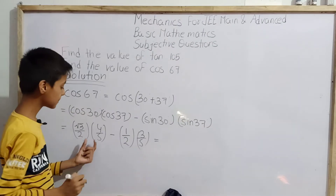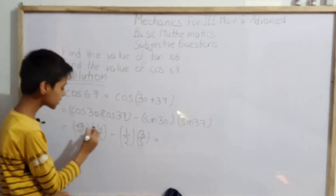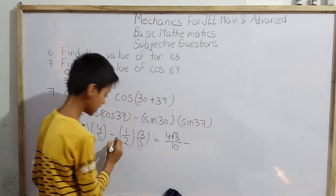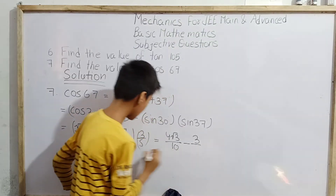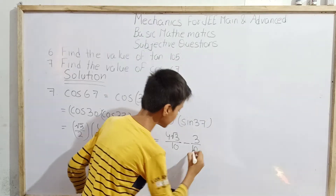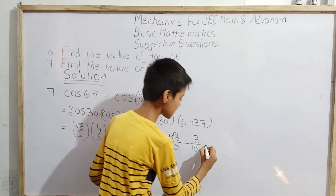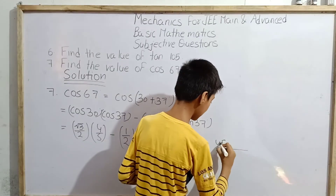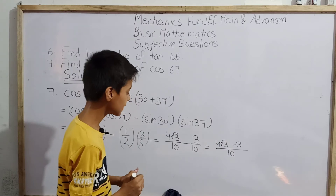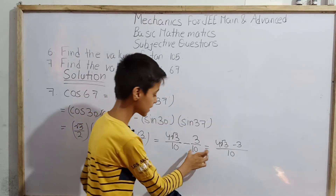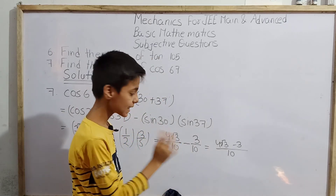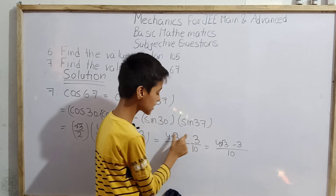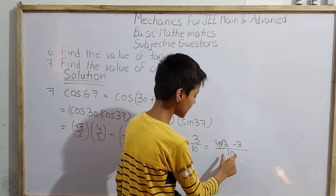Now multiplying: root 3 by 2 times 4 by 5 gives 4 root 3 by 10. And 1 by 2 times 3 by 5 gives 3 by 10. Since both fractions have the same denominator, we subtract the numerators: 4 root 3 minus 3 over 10.